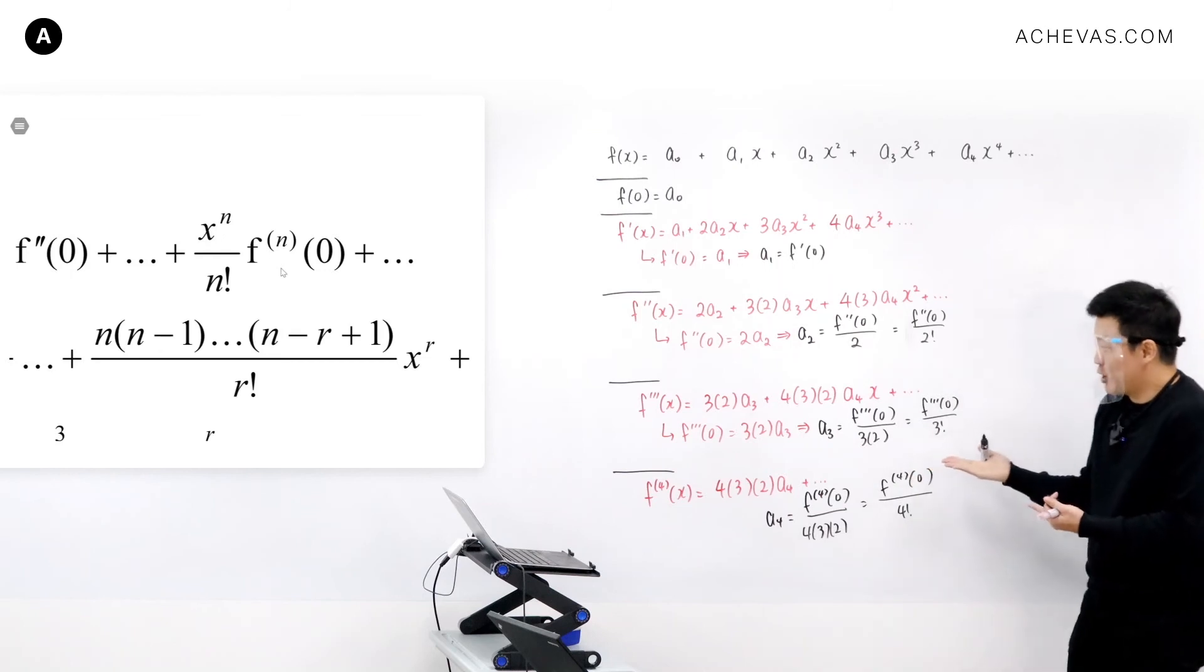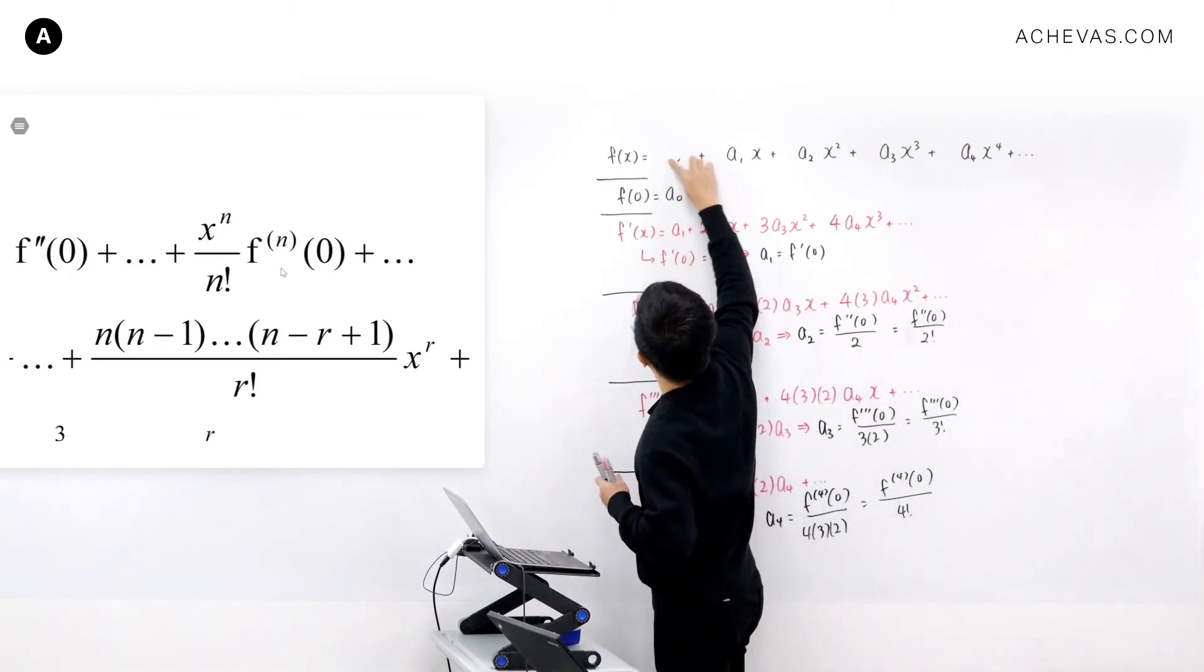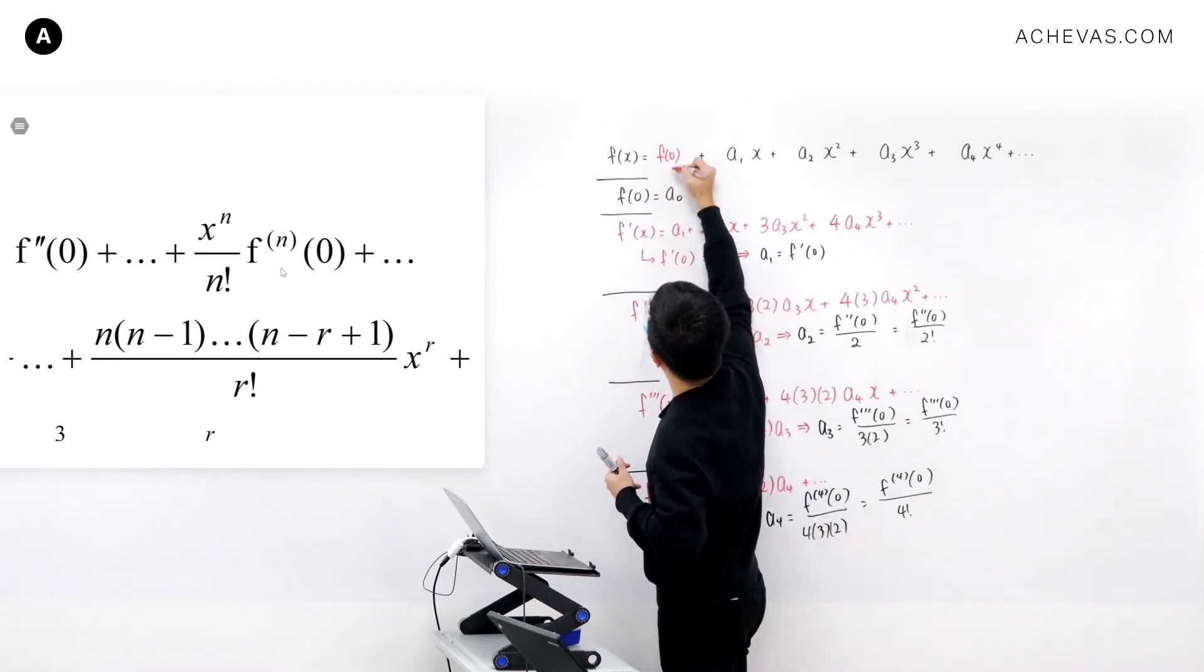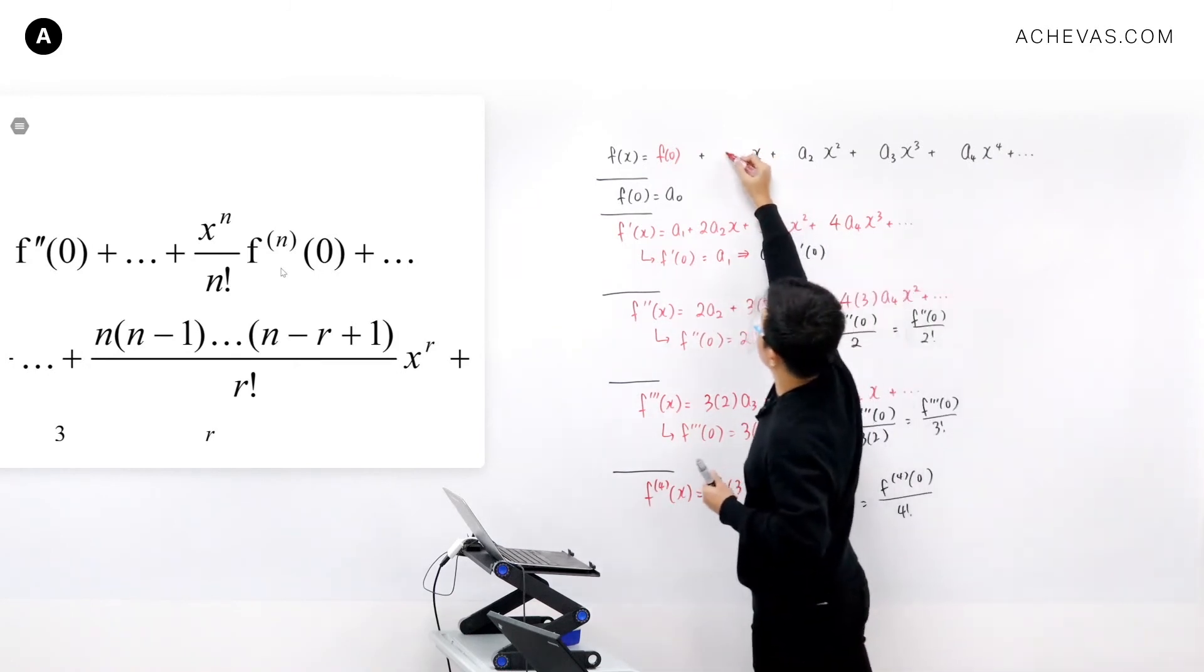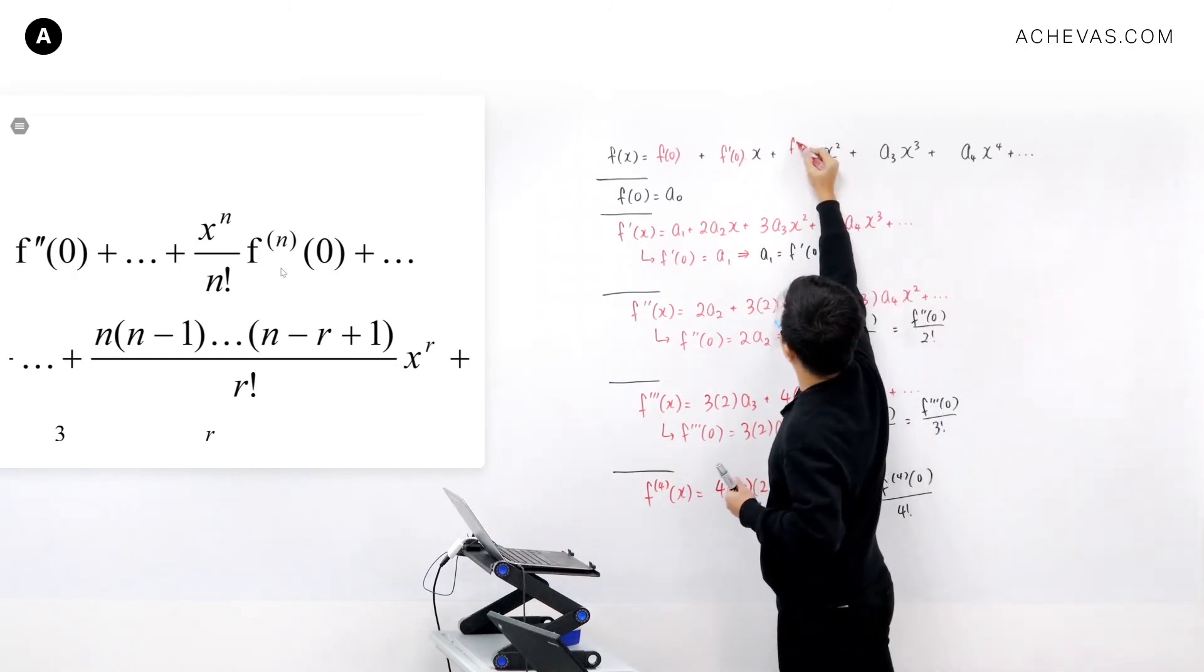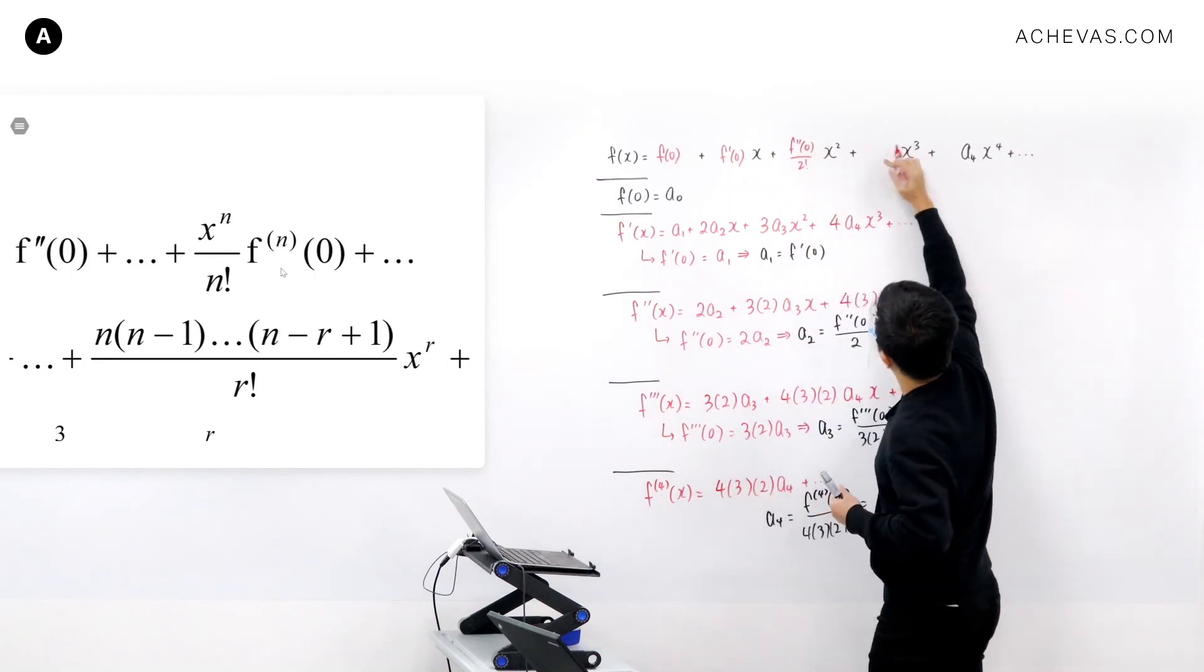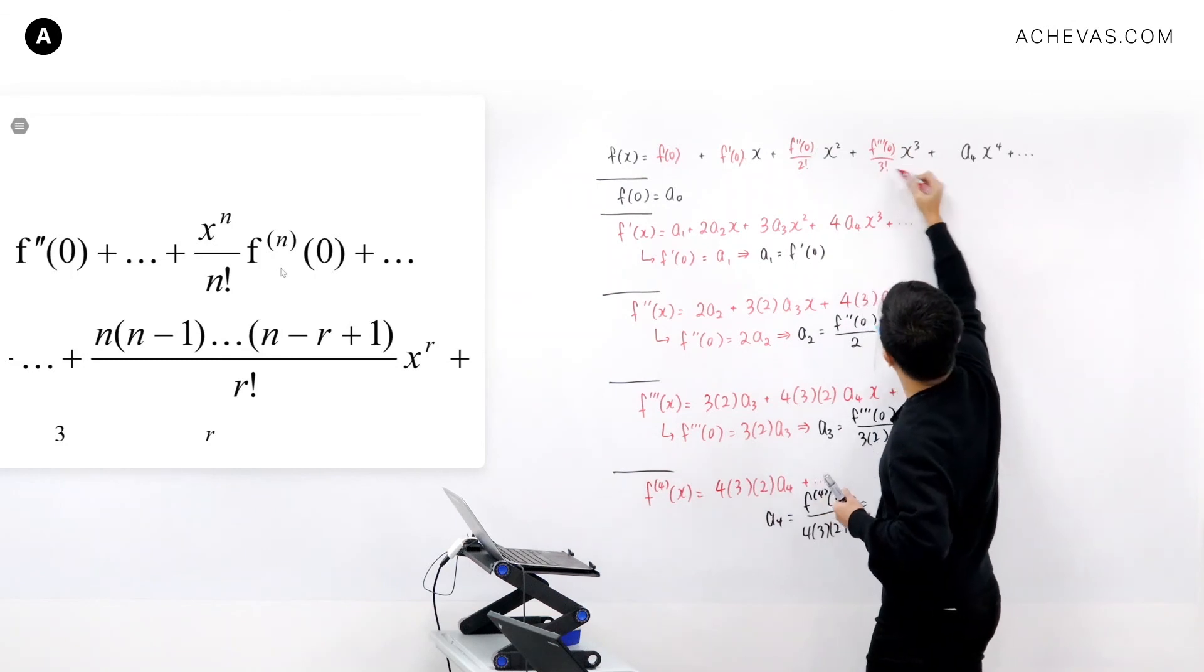Since this is how we can work out the coefficient, I know this a0 is going to be f(0). a1 is going to be f'(0). a2 is going to be f''(0) divided by 2 factorial. This is f'''(0) divided by 3 factorial.